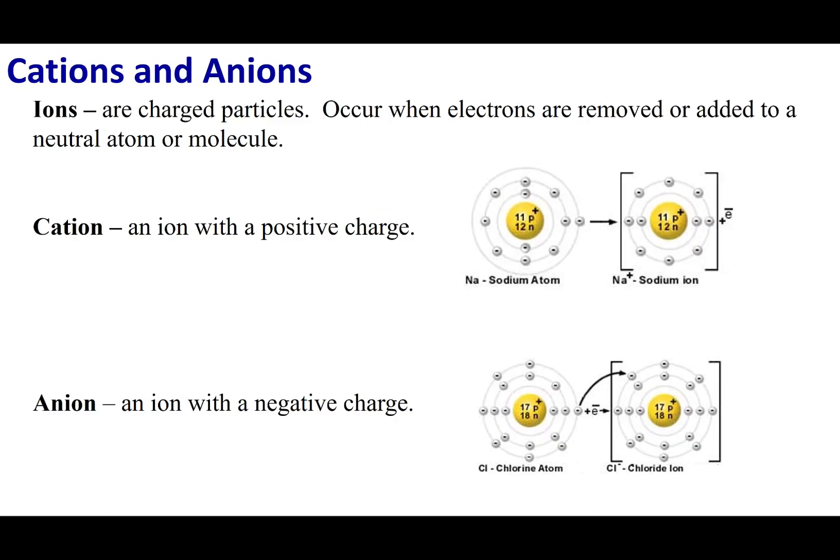First we need to know what an ion is. An ion is a charged particle. And so, what this means is that if I look at my neutral atom, the number of protons equals the number of electrons. And so, if I want a charged particle, what I have to do is make an unequal amount of protons and electrons.